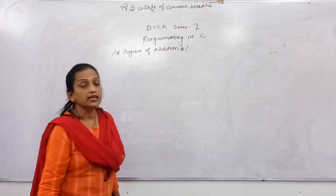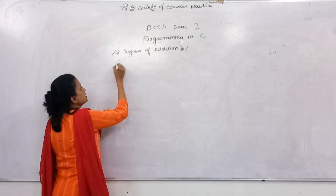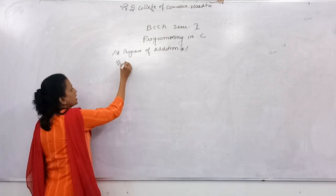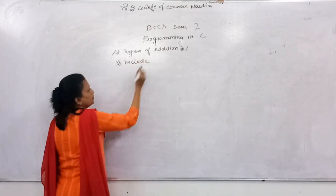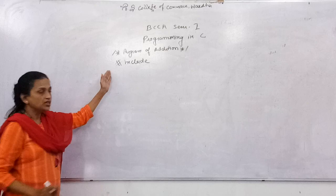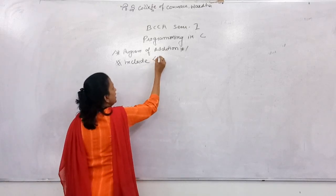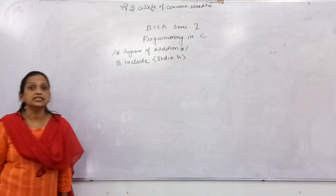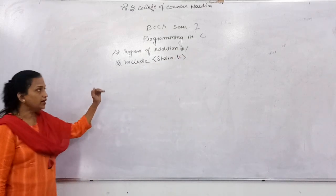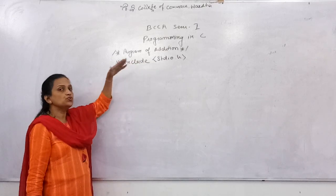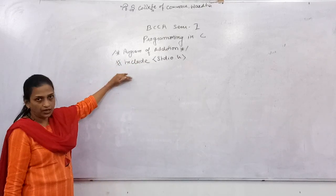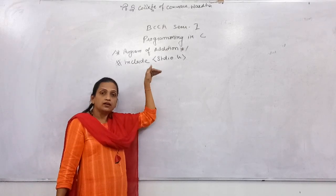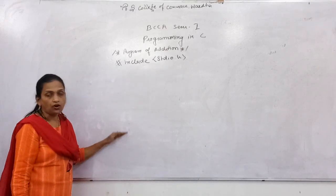Next is the link section. The link section is a pre-processor. In the link section, we have to use hash, include, and the header file. Here we are using one header file. Now let me explain why there is a need to add a link section — why there is a need to include library files along with your programs.